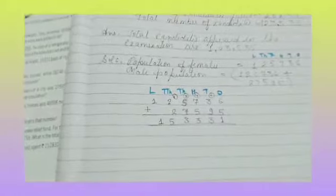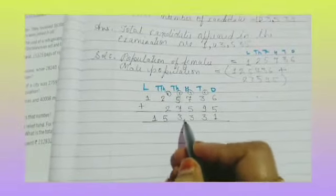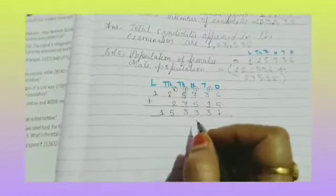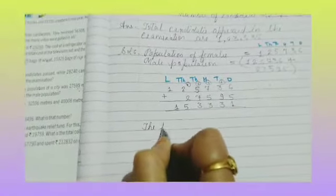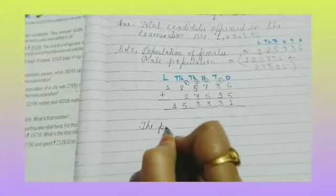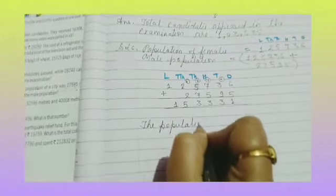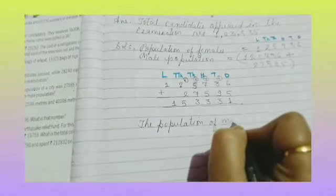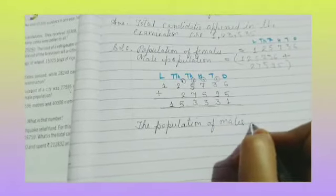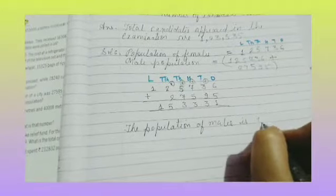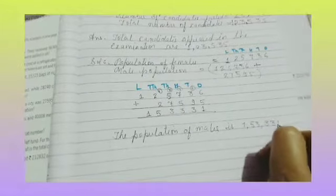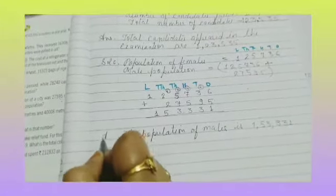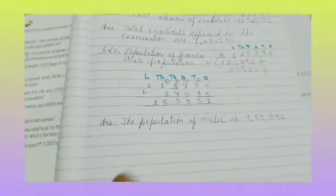So the male population is one lakh fifty-three thousand three hundred and thirty-one. This is our answer. Okay children? Now leave one line and copy down question number 8.